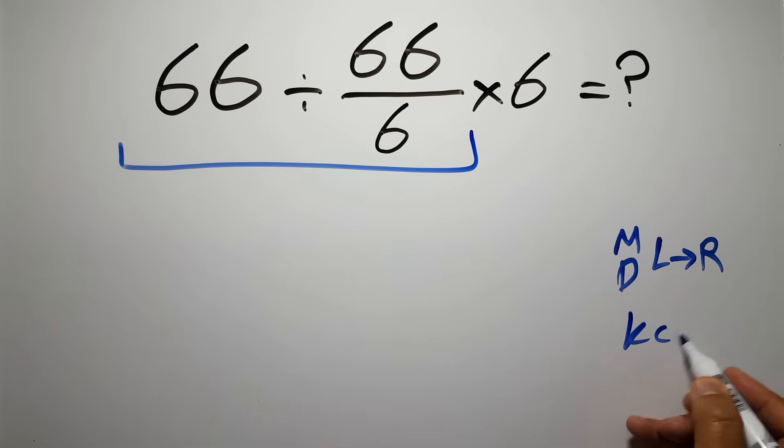According to the KCF rule, K stands for keep, C stands for change, and F stands for flip.